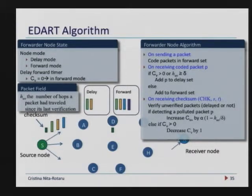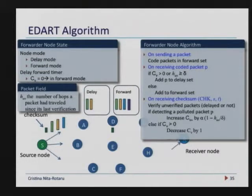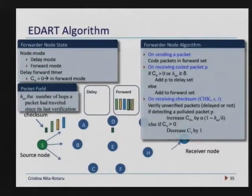If that's not the case, we decrease that because in case we made a mistake, we drop the verification. So that's how we constrain for how long we are going to verify, for how many hops we are going to verify the packets.